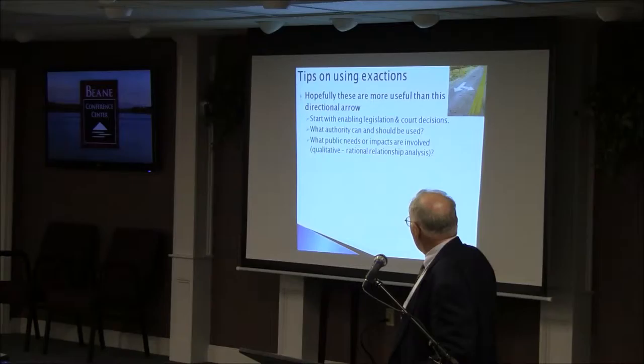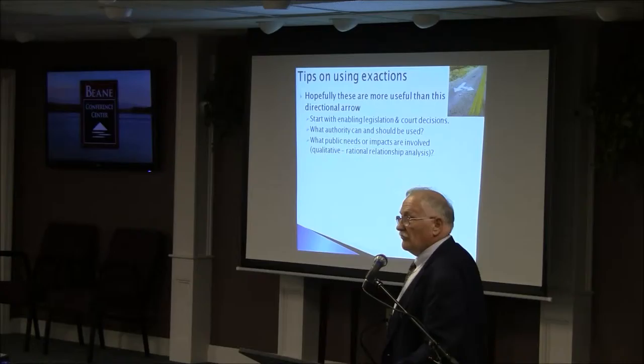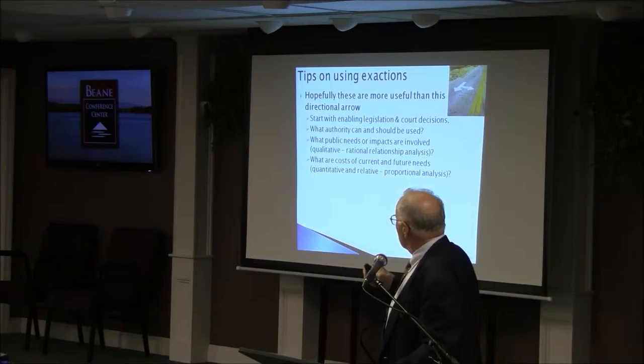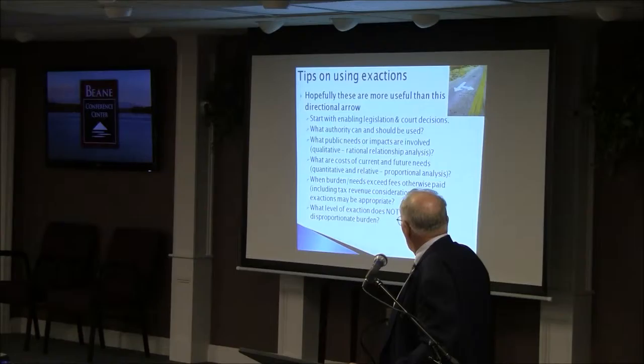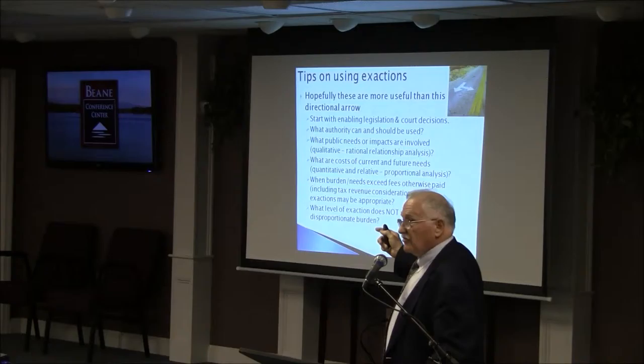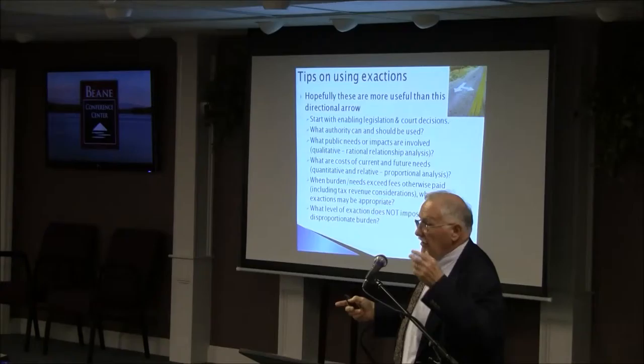Start with naming legislation — what authority can and should be used. Really consider what the impacts are on public facilities, what needs are created by the facility. It's qualitative and a rational relationship. Consider what the costs are — you do this at least in your head, and you ought to do it on paper. When the burden on public facilities exceeds tax revenue considerations and the like, it's the appropriate time to put in exactions.